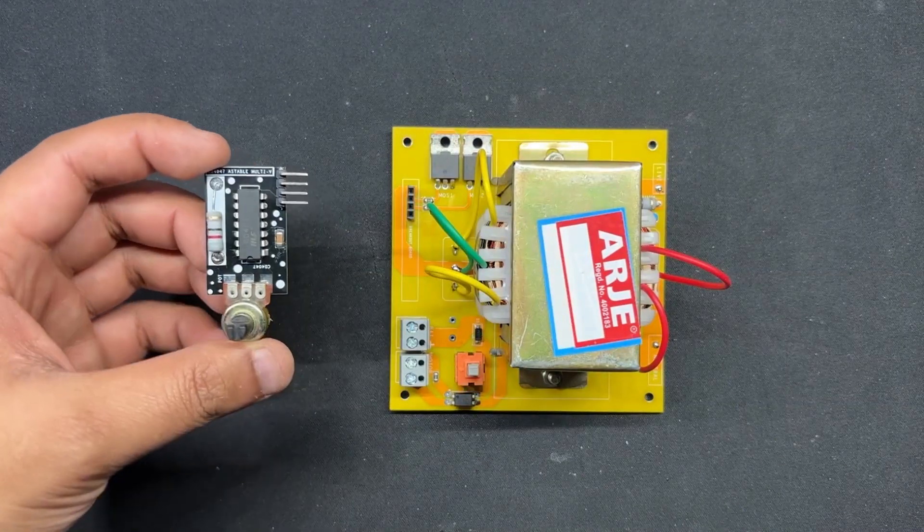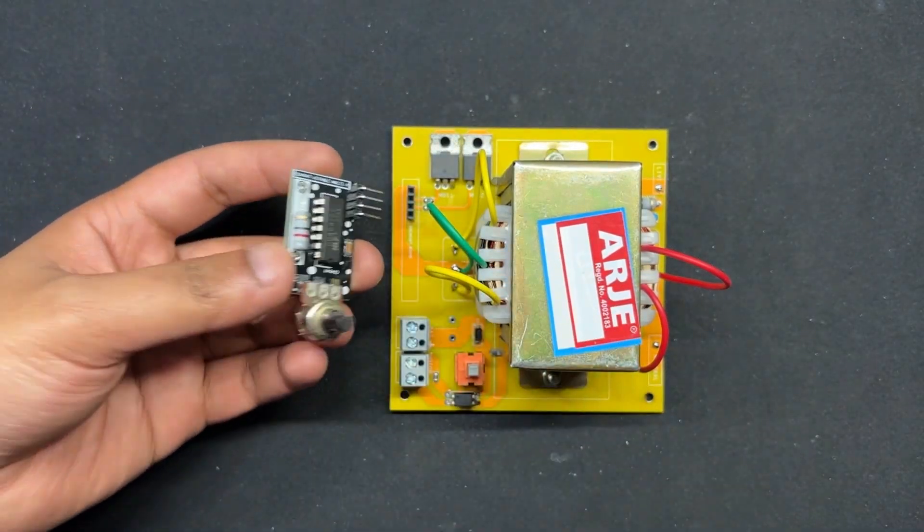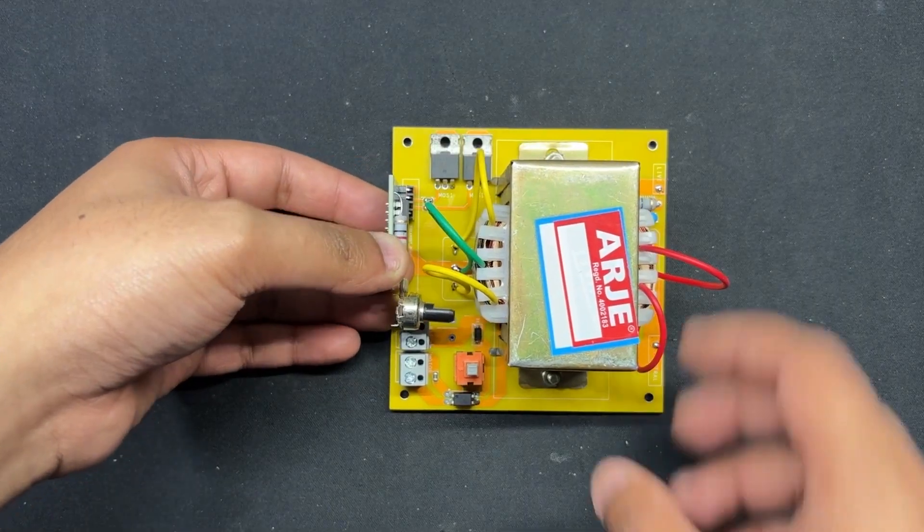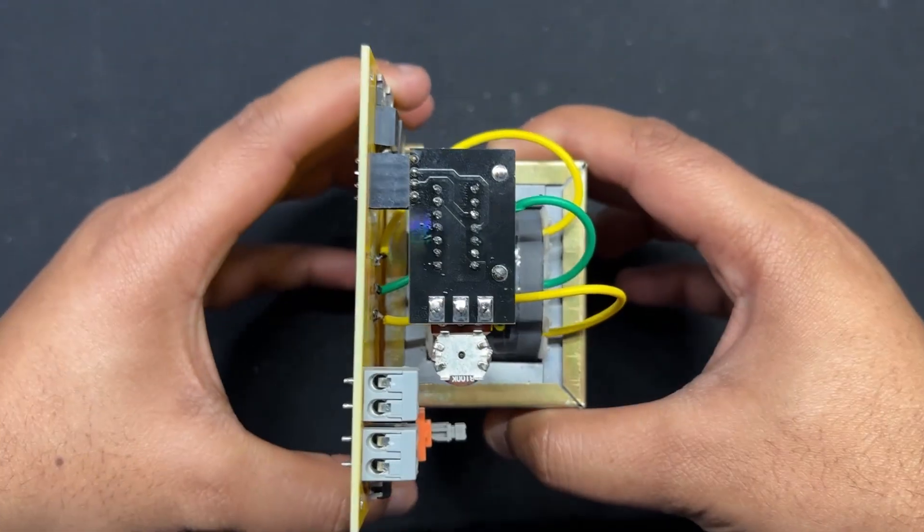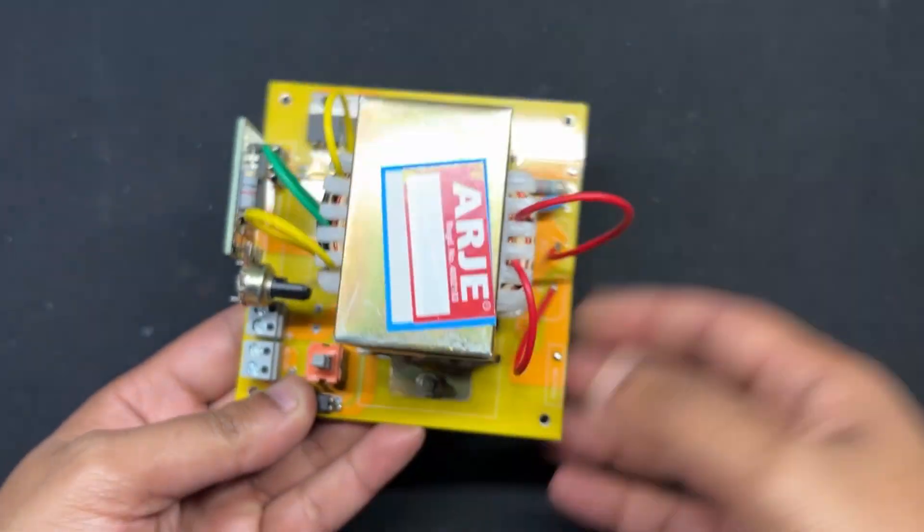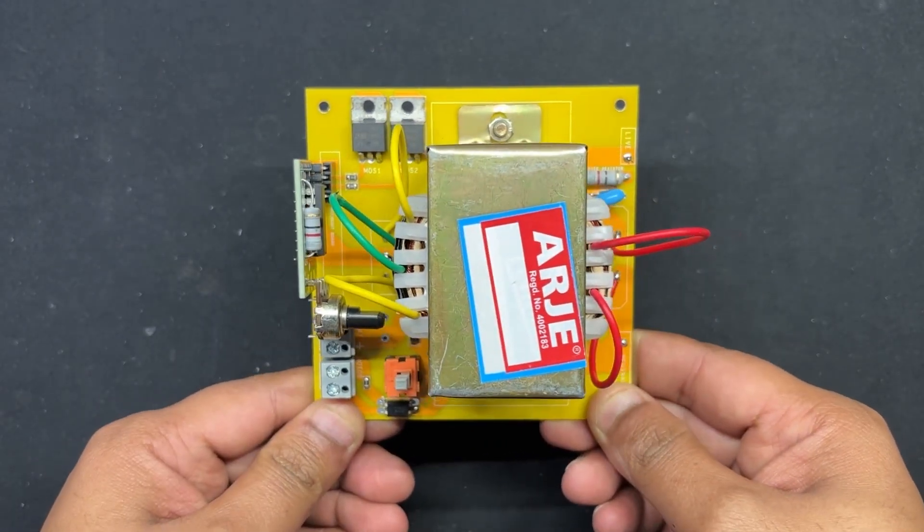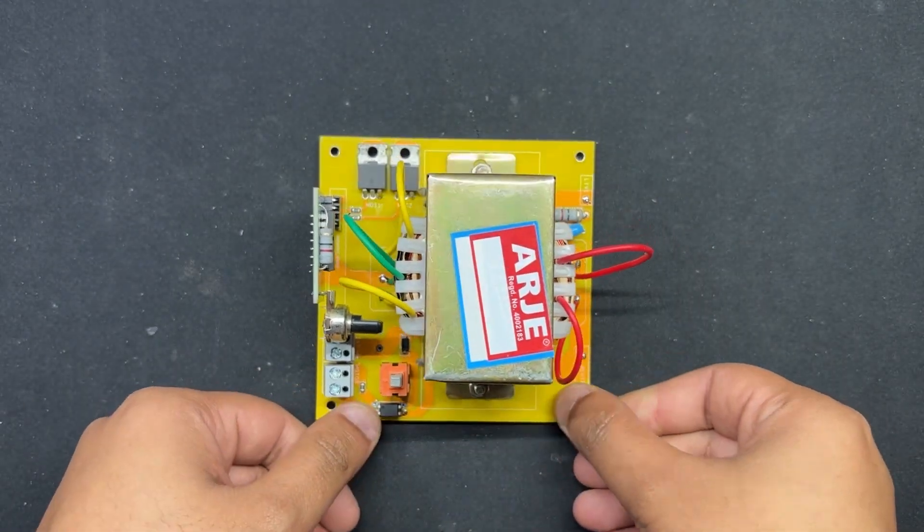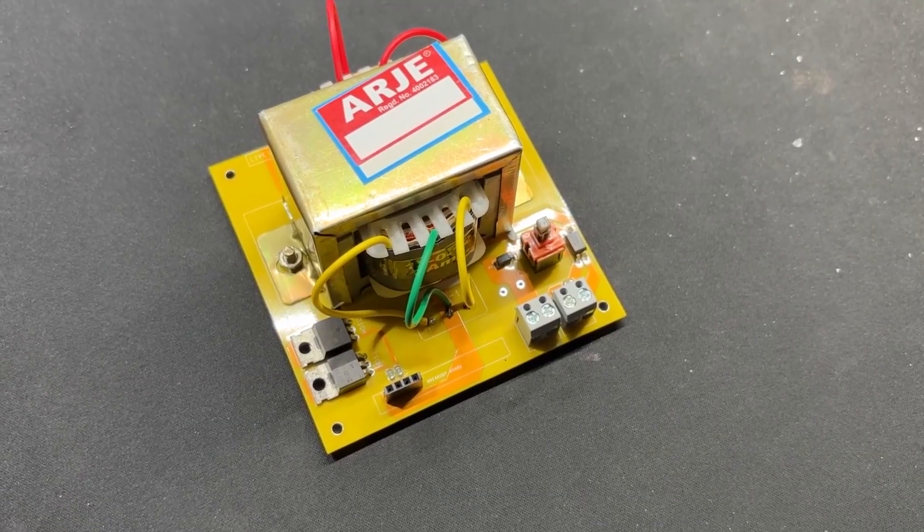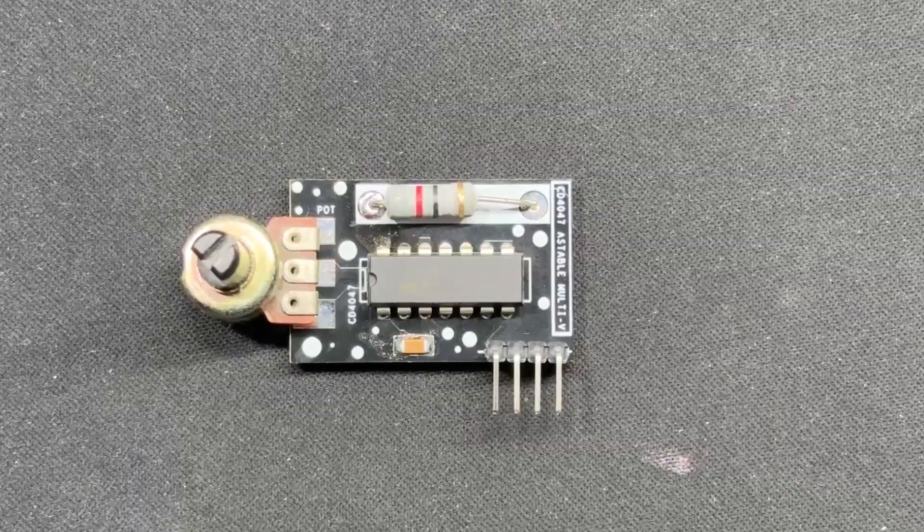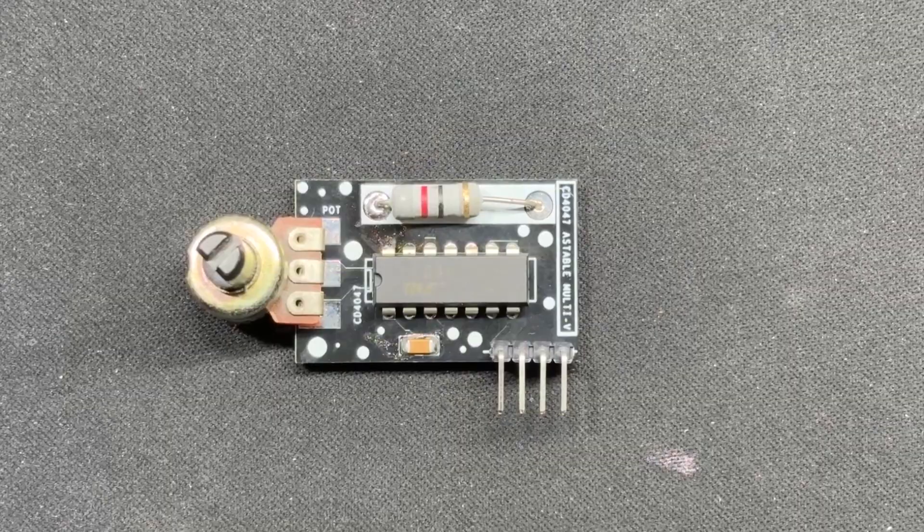Following the assembly process of both the MOSFET board and CD4047 driver circuit, we pick the CD4047 driver circuit and connect it on the MOSFET board by both board's CON4 port. We have attached a female header connector to the MOSFET board and a male header connector to the CD4047 board.